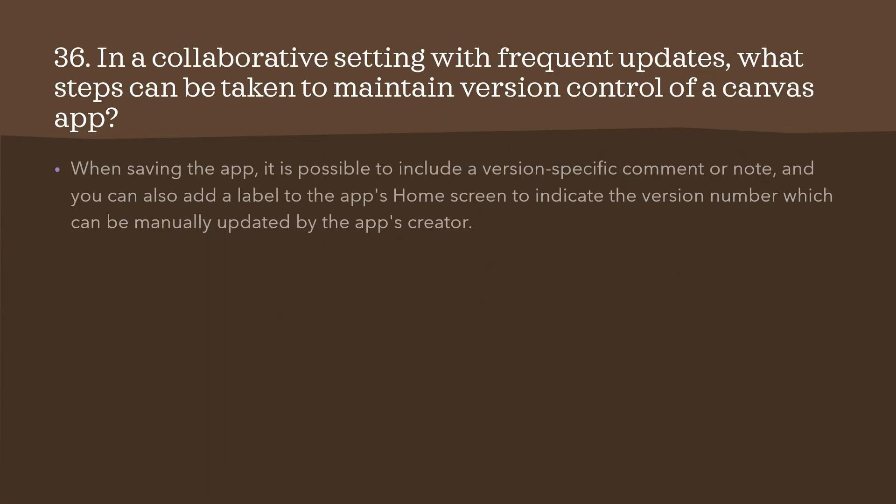Question 36: in a collaborative setting with frequent updates, what steps can be taken to maintain version control of a canvas app? Whenever saving the app, it is possible to include a version-specific comment or note. You can also add a label to the app's home screen to indicate the version number, which can be manually updated by the app's creator every time they publish the app.